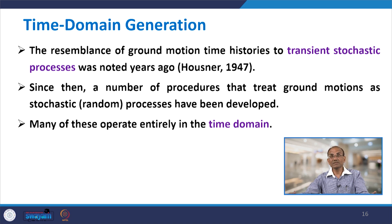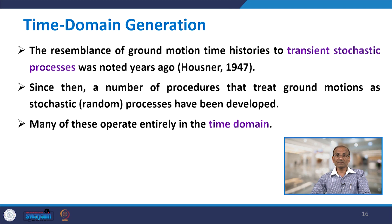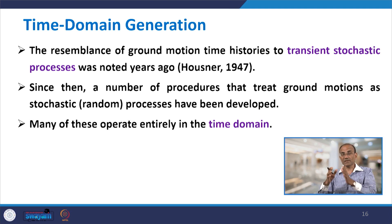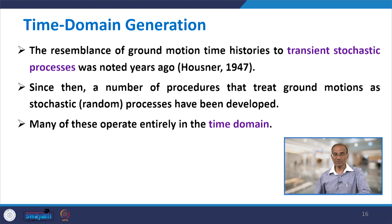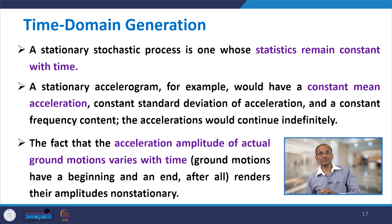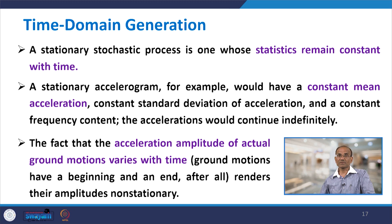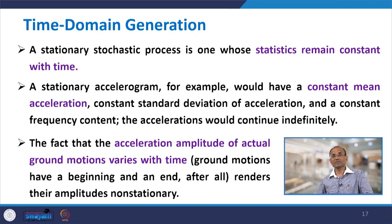For time domain generation, the resemblance of ground motion time series to a transient stochastic process was noted by Housner as early as 1947. Since then, a number of processes that treat ground motions as stochastic — that is, random — processes have been developed, many of which operate entirely in the time domain. A stationary stochastic process is one whose statistics remain constant with time; a stationary accelerogram would have constant mean acceleration, constant standard deviation, and constant frequency content.